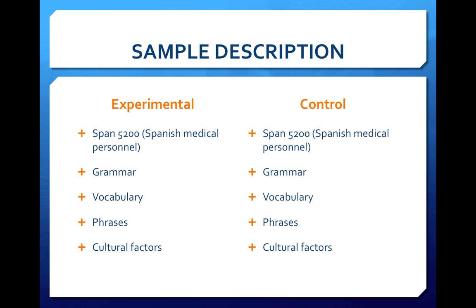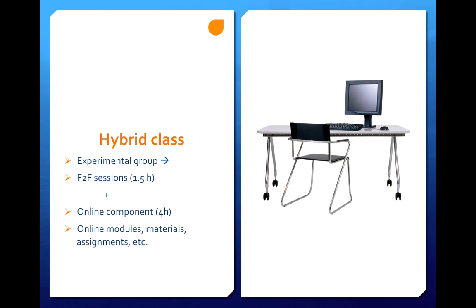Two groups will be established, an experimental group and a control group, and they both will cover pretty much the same content for Spanish medical personnel, aspects such as grammar, vocabulary, phrases and cultural factors. Except that for the hybrid class or the experimental group, it's a combination of face-to-face session of an hour and a half plus an online component. The students are required to spend at least four hours weekly on the online modules, materials and assignments.